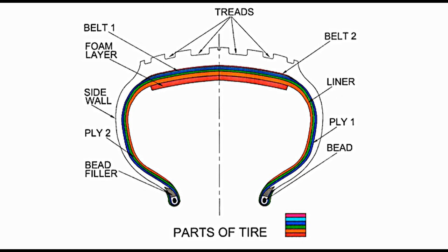Ply. Ply comprises polyester, rayon, or nylon cord with rubber impregnated. It is part of the tyre structure and provides strength to the tyre, making it capable of withstanding inflation pressure. The number of plies depends upon the load required to be taken up. There are two plies shown in the diagram — ply 1 in blue colour and ply 2 in green colour — both seen next to the liner.